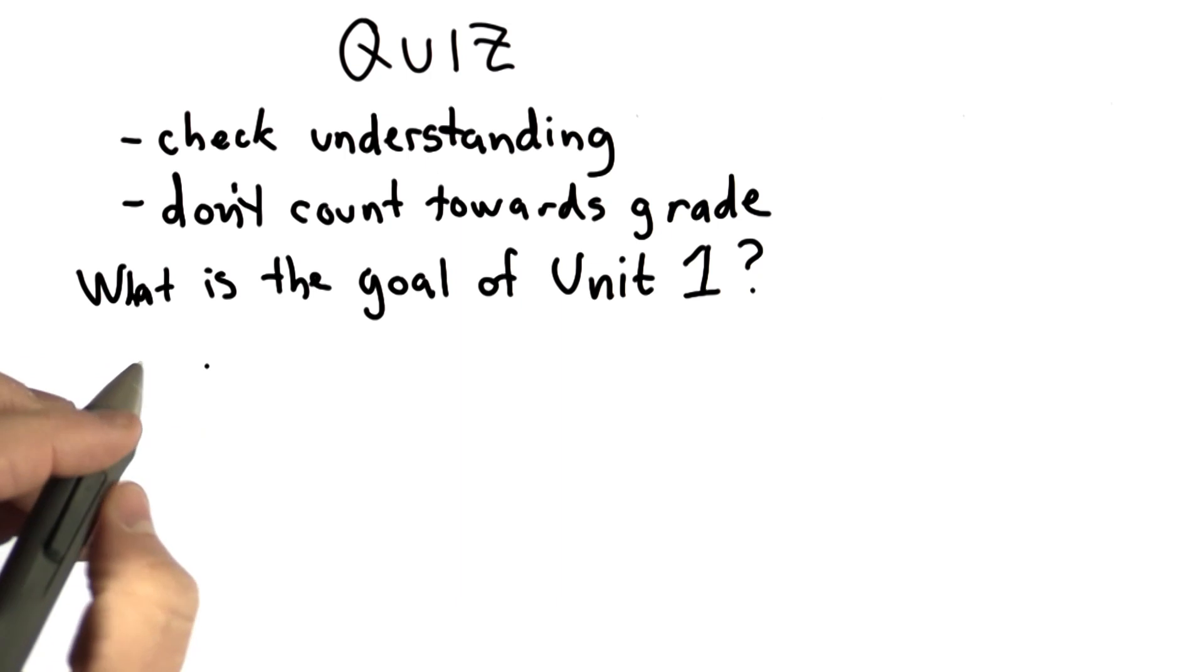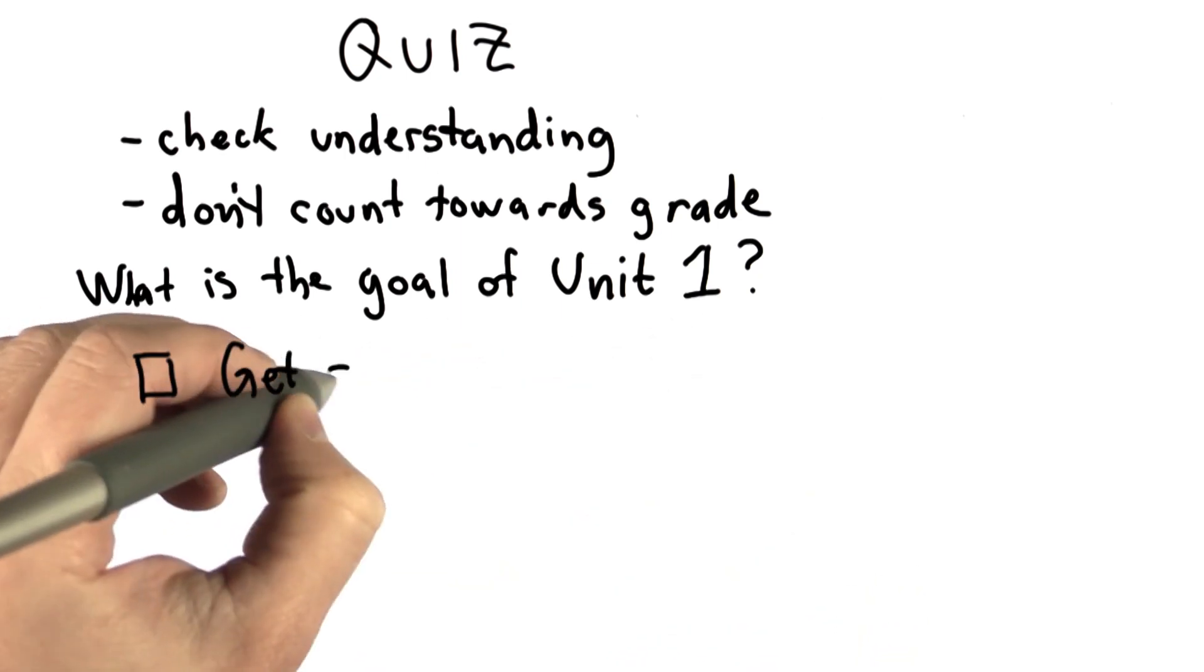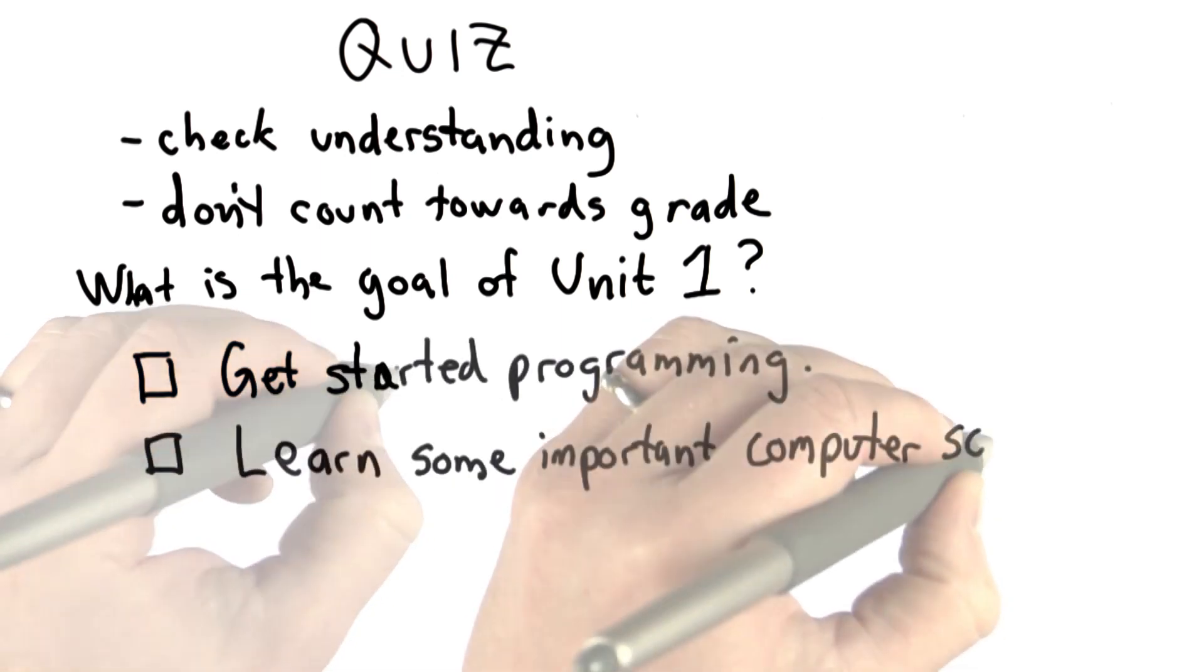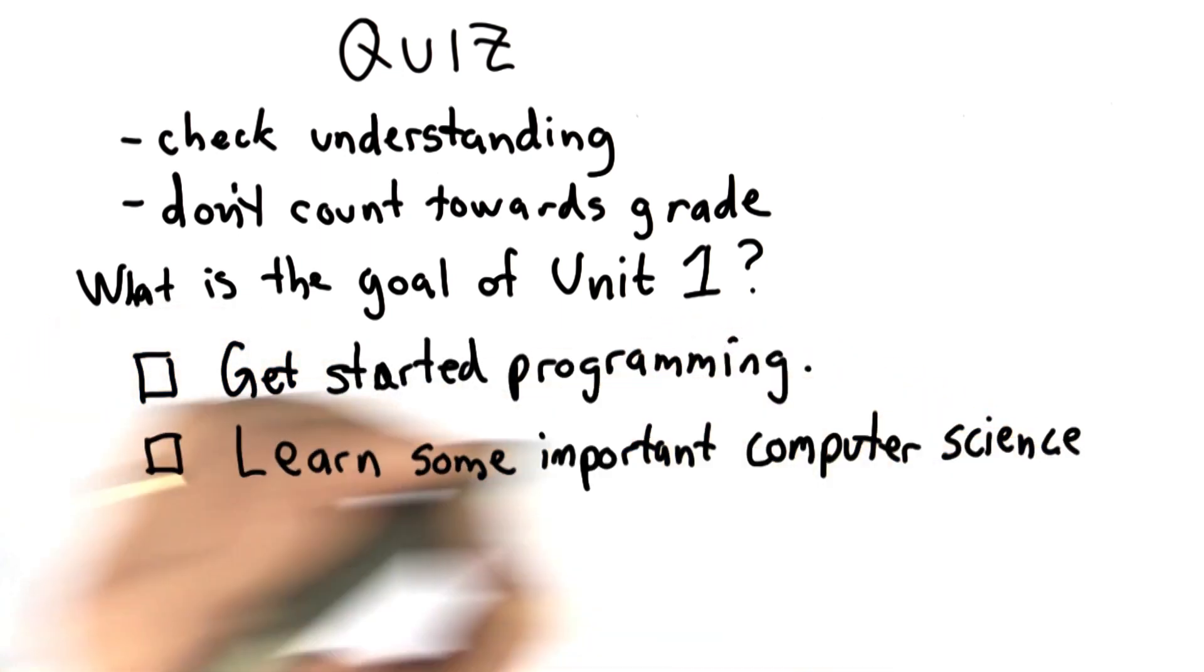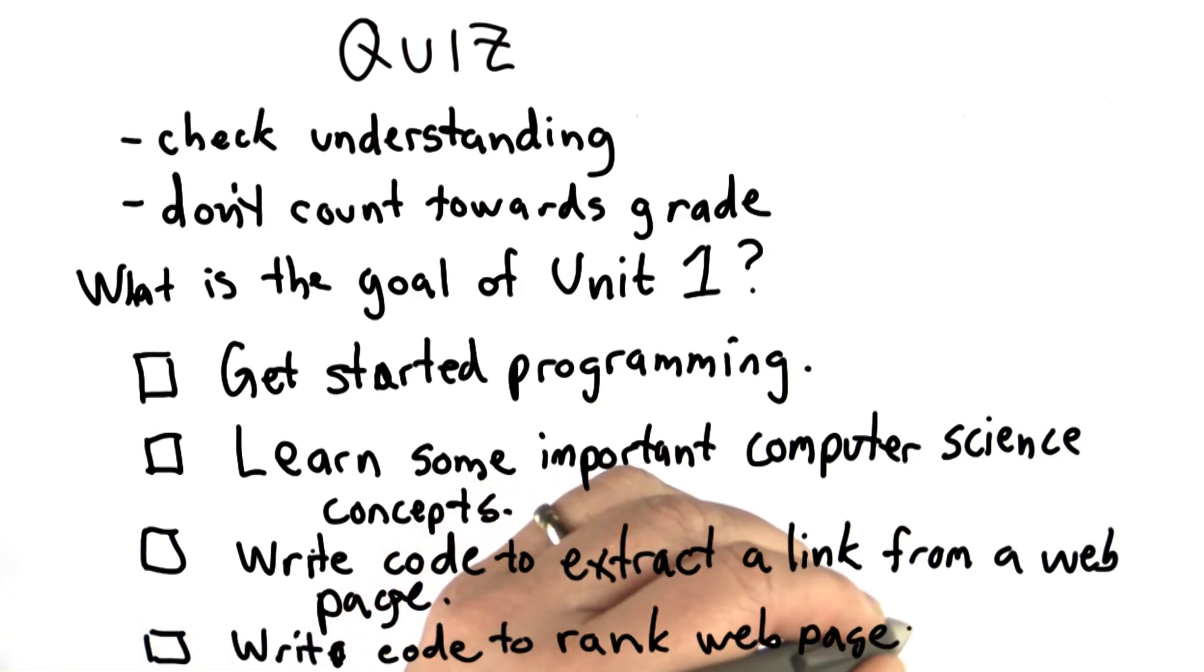There are four choices. You can check all the choices that you think are good answers. The goal is to get started programming. The second choice is to learn some important computer science concepts. The third choice is to write some code that extracts a link from a web page. And the fourth choice is to write code to rank web pages.